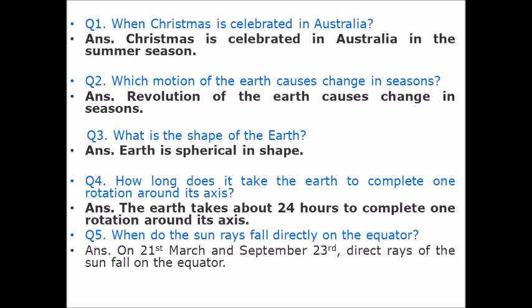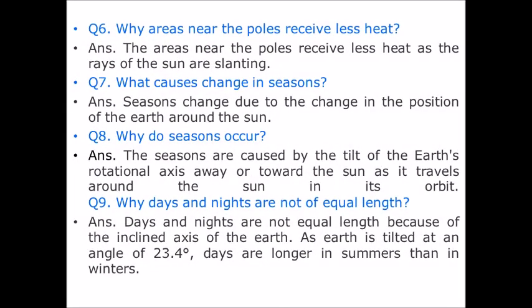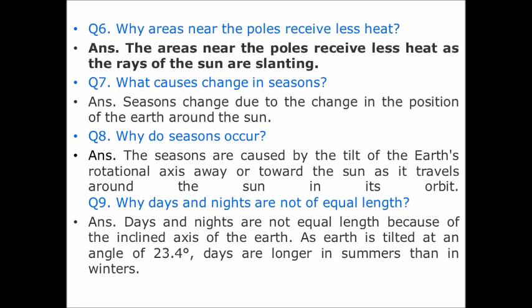Question number 5: When do the sun rays fall directly on the equator? Answer: On 21st March and September 23rd, direct rays of the sun fall on the equator. Question number 6: Why do areas near the poles receive less heat? Answer: The areas near the poles receive less heat as the rays of the sun are slanting.